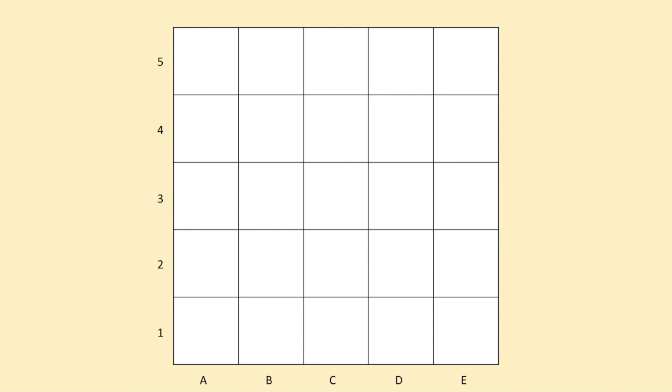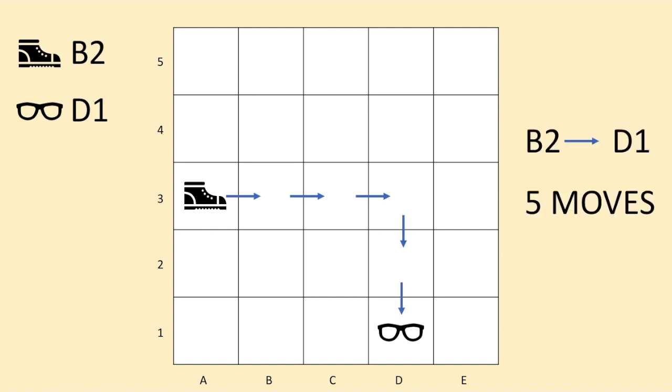The same is true even when it's not a straight line. If this grid was the map of a mall and we had a shoe store at B2, and we wanted to get to the optometrist, which is an eye doctor, at D1, I have to count each individual move. One, two, three, four, five. So from B2 to D1 is five moves on the grid.